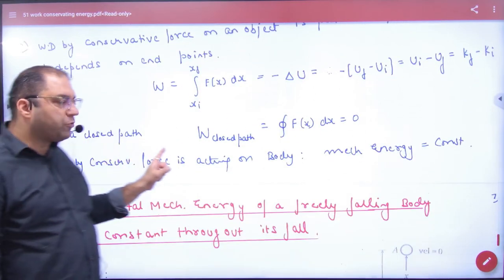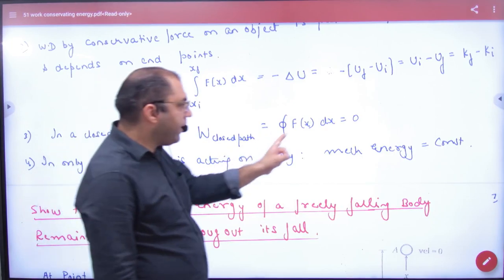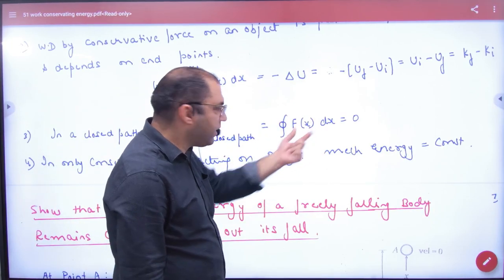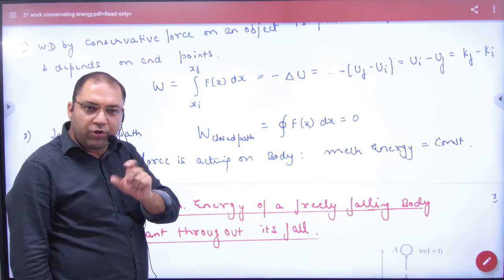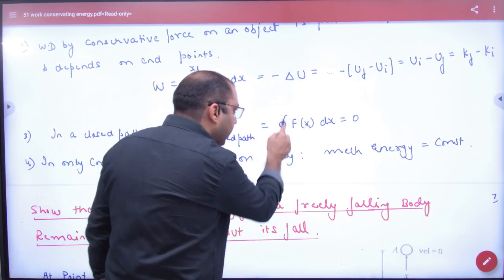In a closed path, integration of F dx for conservative force - F dx means work done. The value of closed path is to put a circle in integration.